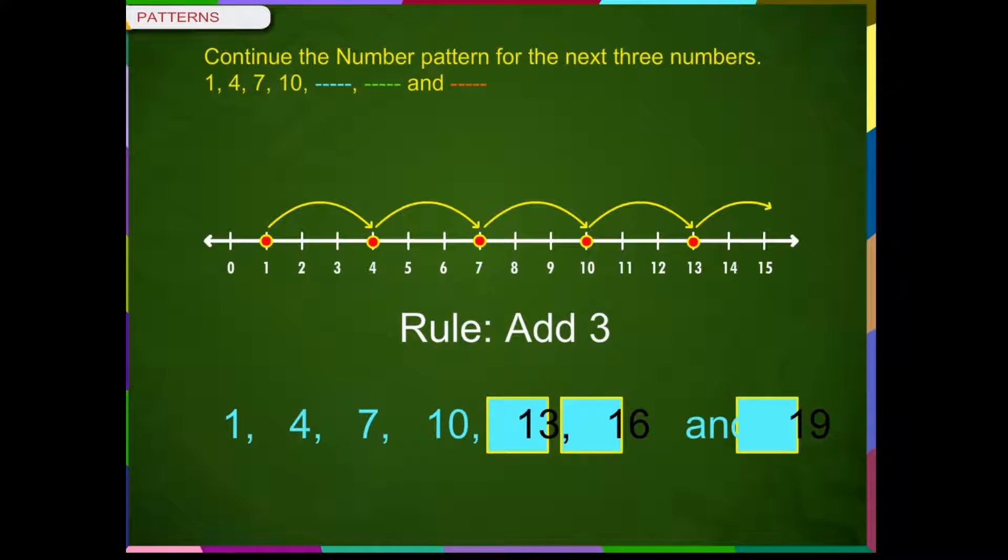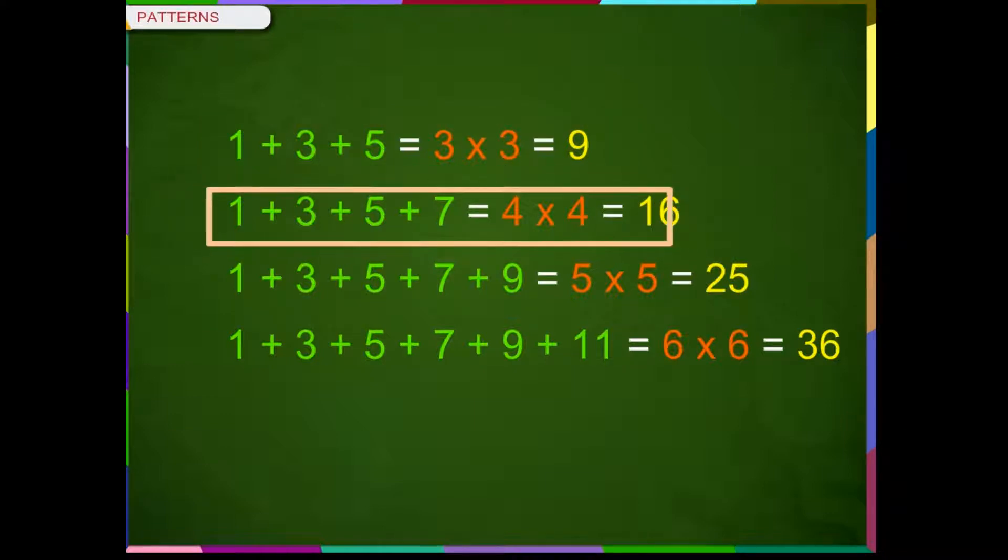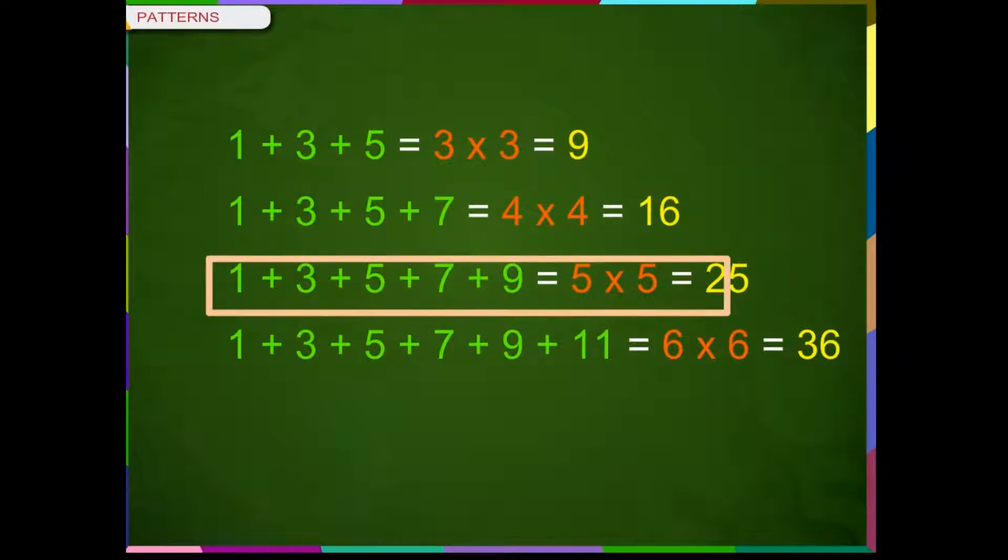Let us see some different types of patterns now. 1 plus 3 plus 5 is equal to 9. 1 plus 3 plus 5 plus 7 is equal to 16. 1 plus 3 plus 5 plus 7 plus 9 is equal to 25.